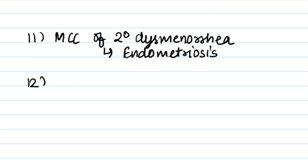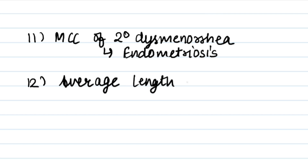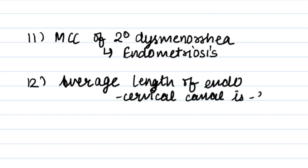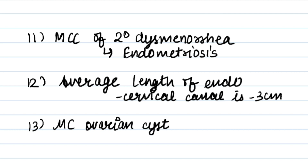The average length of the endocervical canal is 3 cm — I've already uploaded a video on normal anatomical values, you can watch that too. Next point: the most common ovarian cyst to rupture is the corpus luteal cyst.